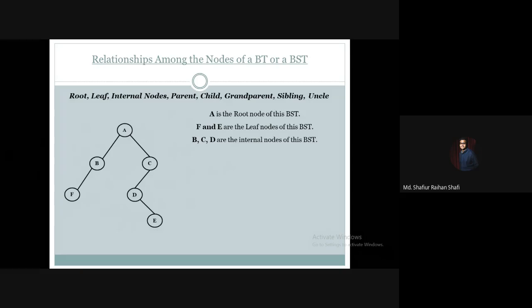Apart from the root and the leaf nodes, the remaining nodes will be called internal nodes. So in our example, B, C, and D — these three nodes — are called internal nodes.